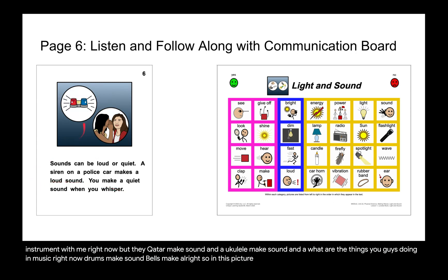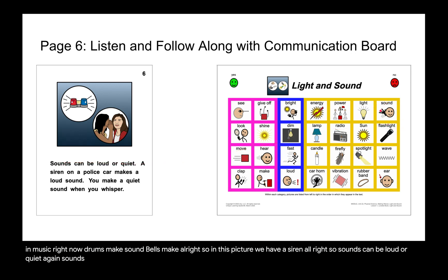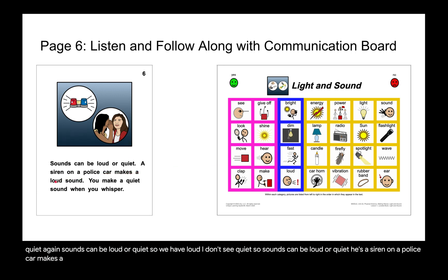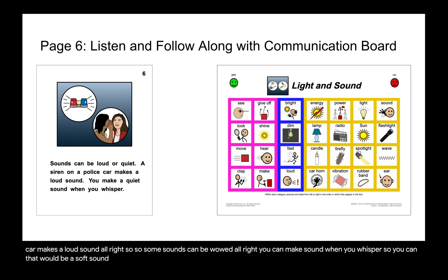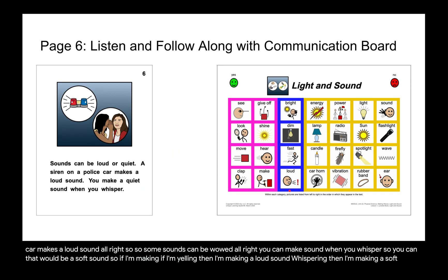In this picture we have a siren. Sounds can be loud or quiet. A siren on a police car makes a loud sound. Some sounds can be loud. You can make sound when you whisper — that would be a soft sound. If I'm yelling, then I'm making a loud sound. And if I'm whispering, then I'm making a soft or quiet sound.